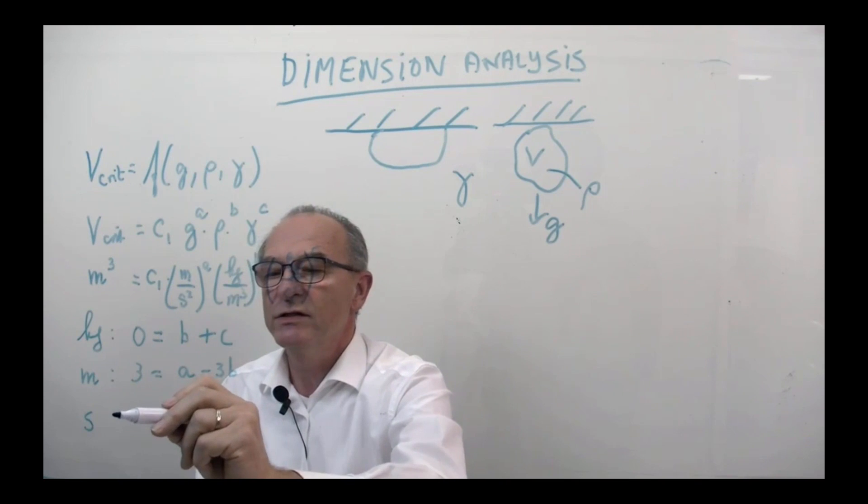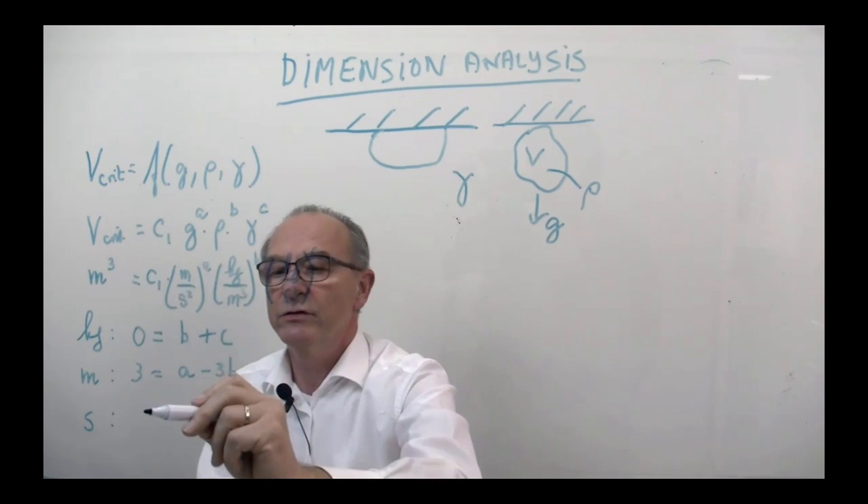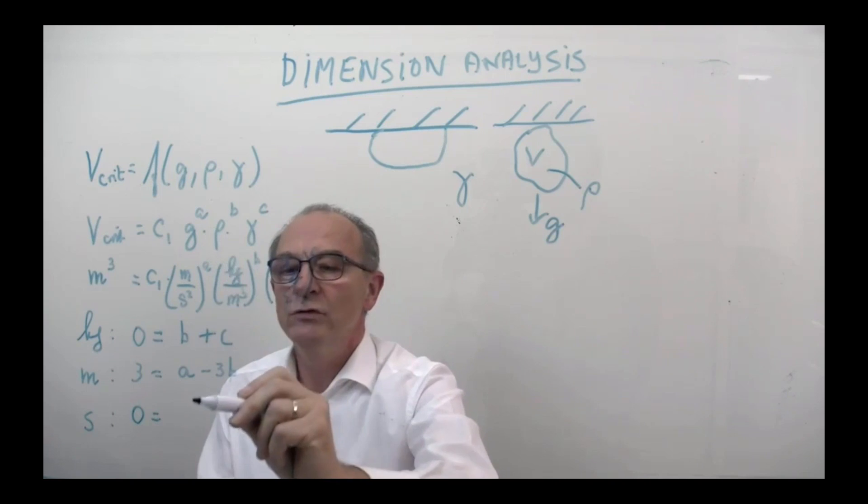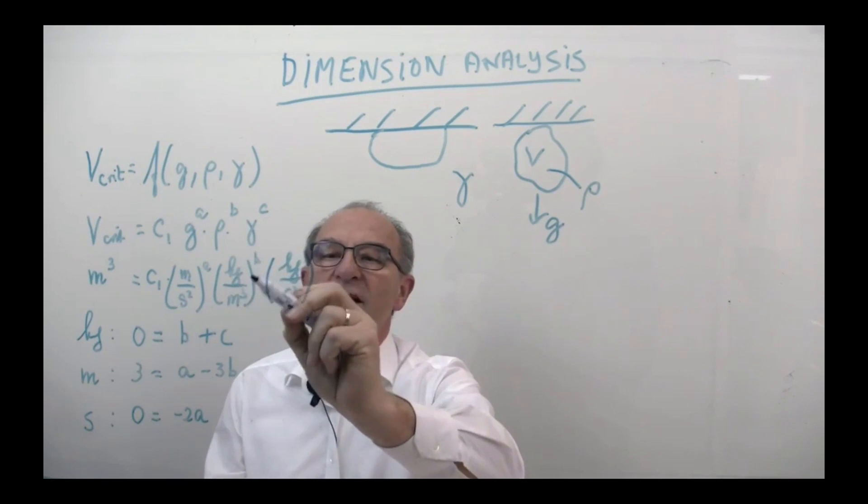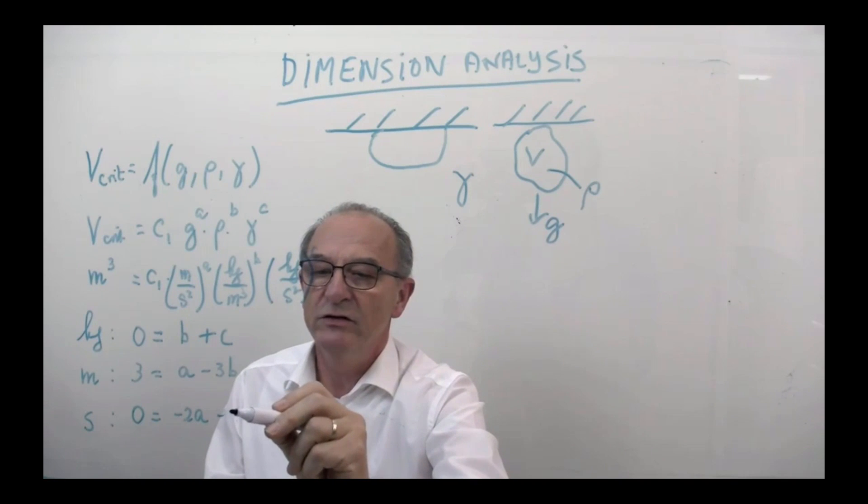And the last equation is the seconds. There are no seconds on this side, zero is equal to minus two A, here we don't see any seconds, and here the last is minus two C.